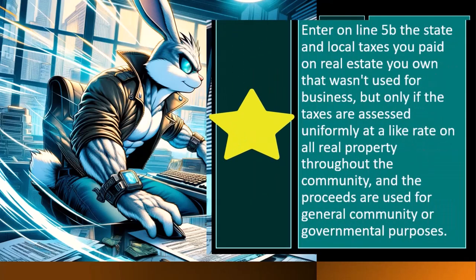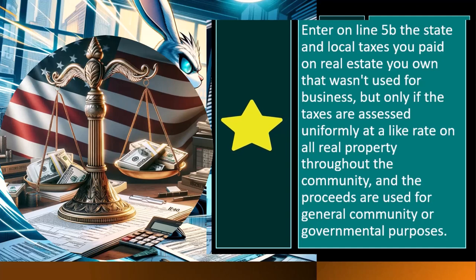Enter on line 5B the state and local taxes you paid on real estate you own that wasn't used for business, but only if the taxes are assessed uniformly at a like rate on real property throughout the community and the proceeds are used for general community or government purposes.